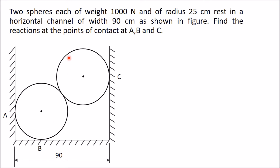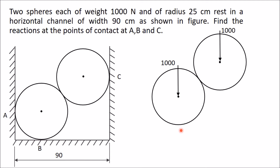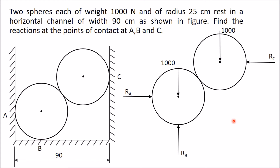First, draw the free body diagram of these two spheres together. Draw the two spheres and show the weight of 1000 Newton acting vertically downward for each sphere. Remove the left vertical support and show reaction RA perpendicular to that surface, passing through the center of the sphere. Remove the base and show reaction RB perpendicular to the horizontal surface at point B, also passing through the center. For the right vertical support, show reaction RC at point C, passing through the center of that sphere.